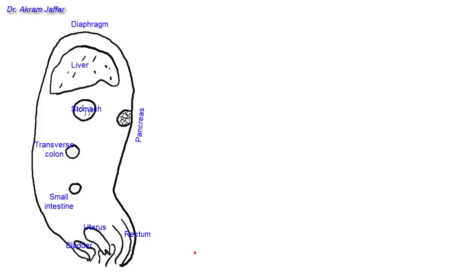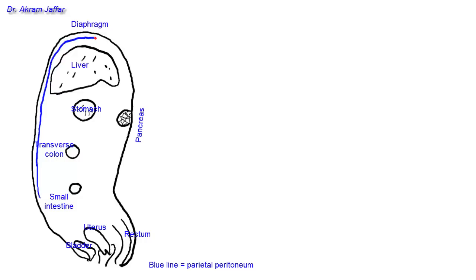The peritoneal cavity is a potential space located between the visceral and parietal layers. I'll draw the parietal peritoneum in blue, starting near the anterior abdominal wall close to the umbilicus and going up — this is the parietal peritoneum of the anterior abdominal wall — and then the peritoneum lines the diaphragm.